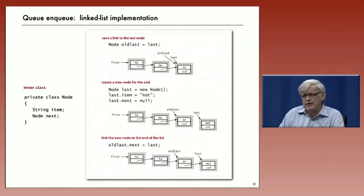To add a node or enqueue, add a new node to the end of the list. We want to put it at the end. So that'll be the last one returned.